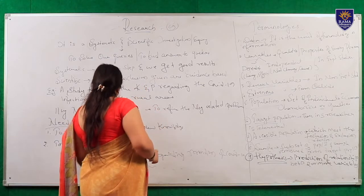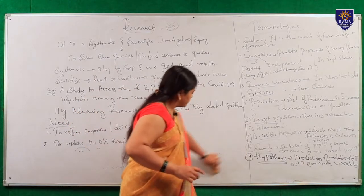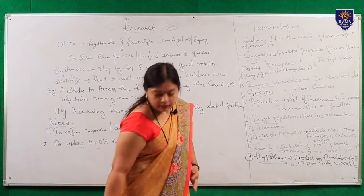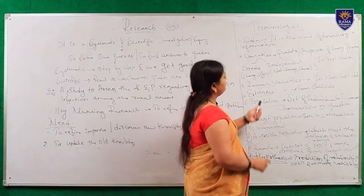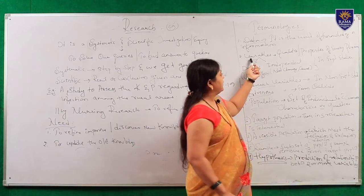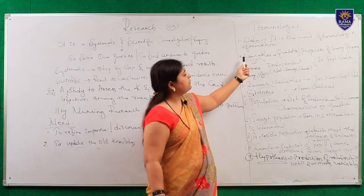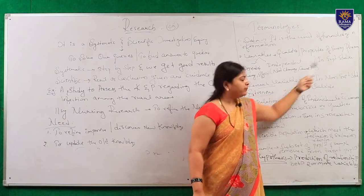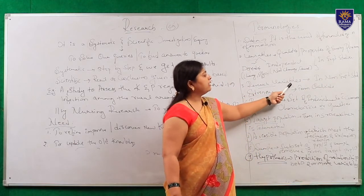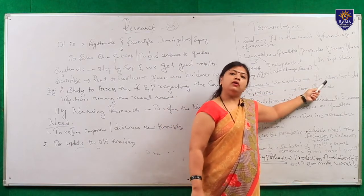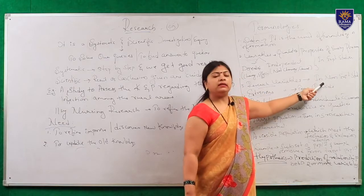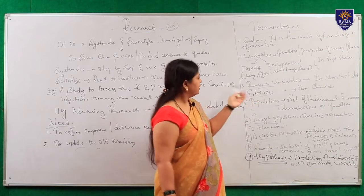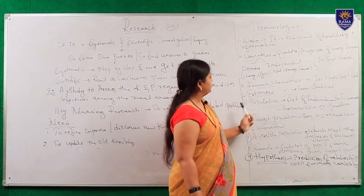Next comes research variables. What are research variables? Whenever we are doing a study we will be finding some research variables. I told you about dependent and independent variables - they are especially used in experimental studies. But research variables are used in non-experimental studies. We will see this in our next session when we define the types of research.